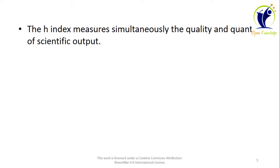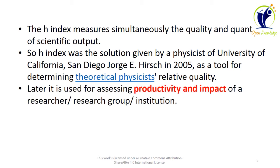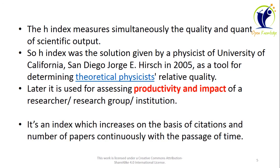H-Index measures simultaneously the quality and quantity of scientific output. H-Index was a solution given by physicist George E. Hirsch of the University of California, San Diego, in 2005, as a tool for determining the relative quality of theoretical physicists. Later it was used for assessing productivity and impact of a researcher, research group, or institution. It is an index that increases continuously with the passage of time, based on citations and number of papers.